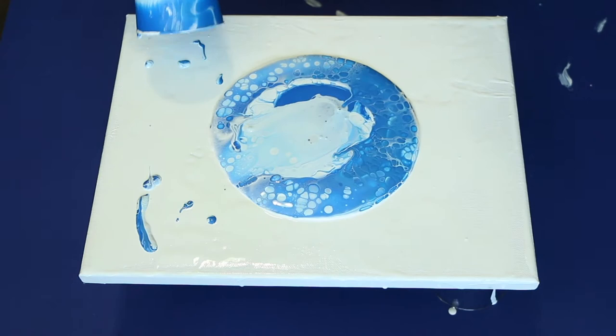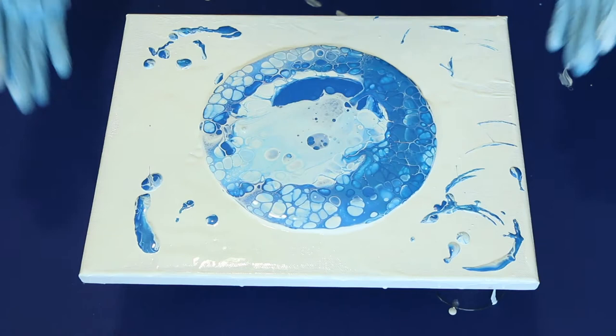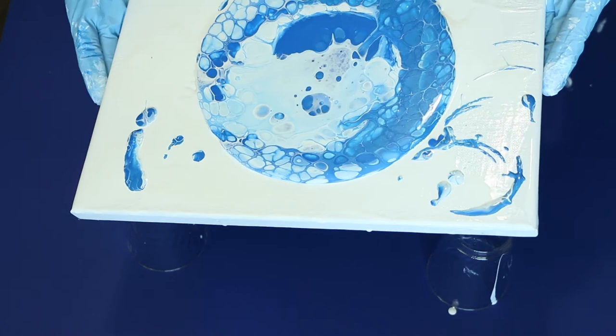Once you get all the paint out, you can go ahead and start tilting the canvas to spread the paint around. Keep in mind that you're not going to have full control over where the paint goes, but going slowly will help give you more control, as well as keep the cells intact.